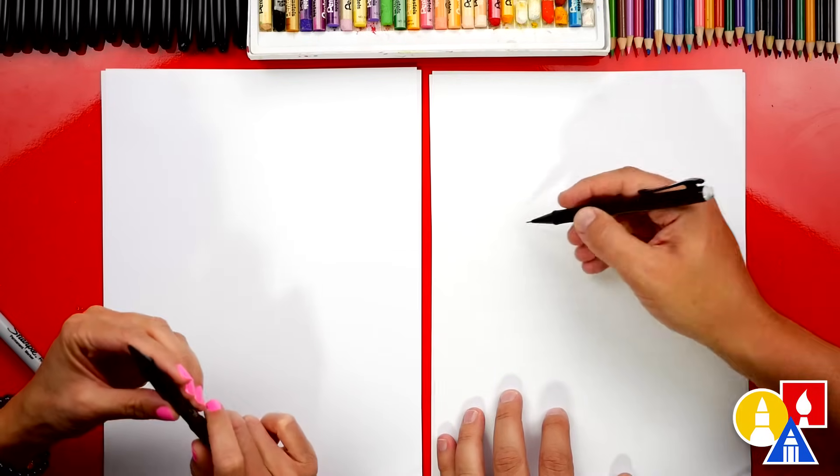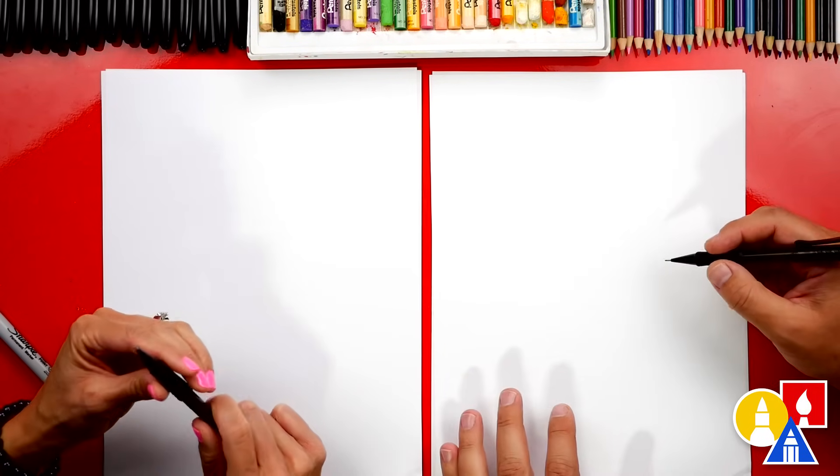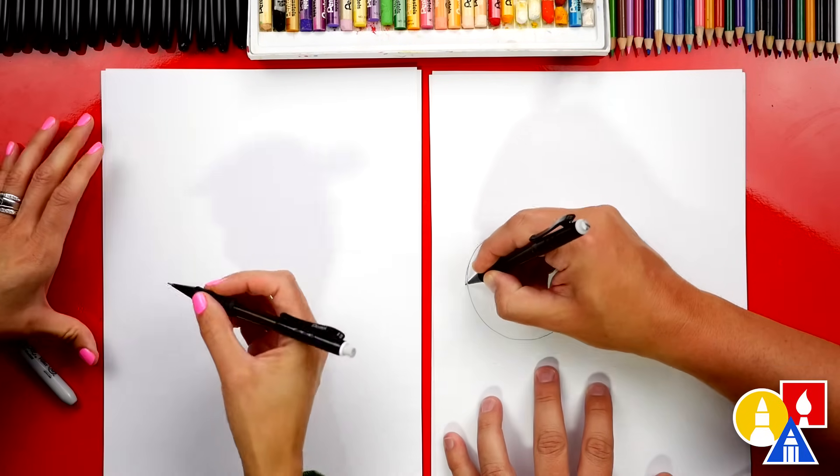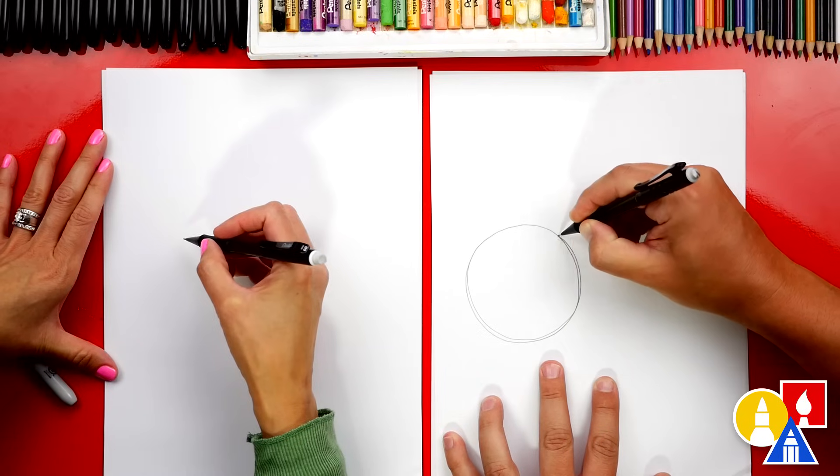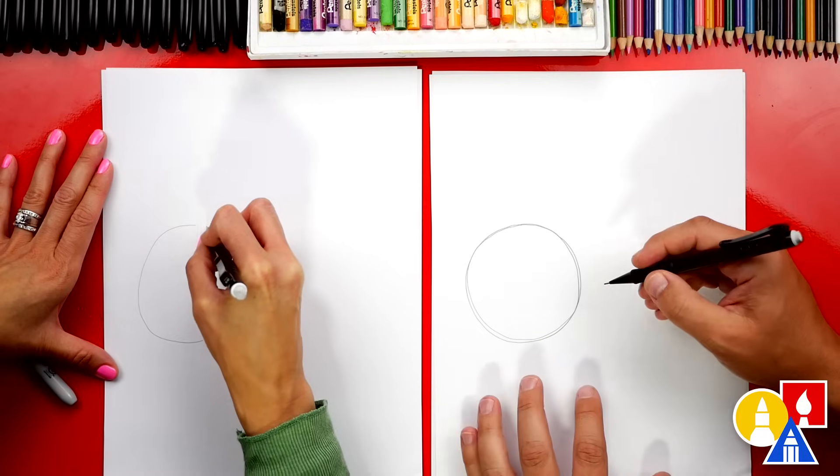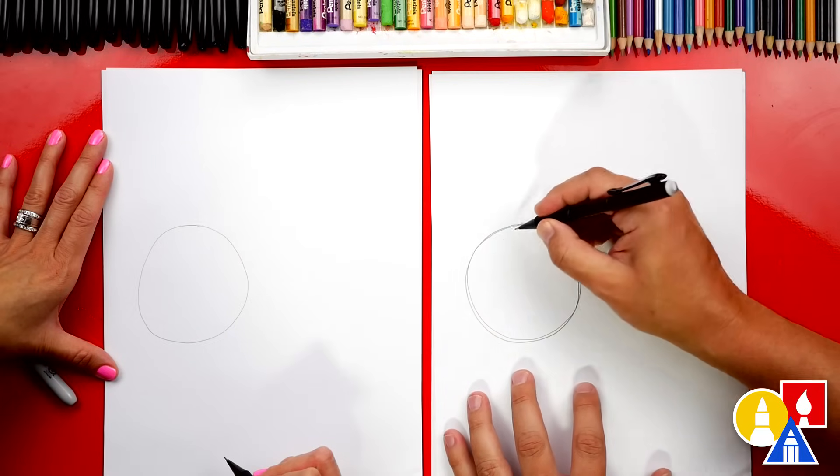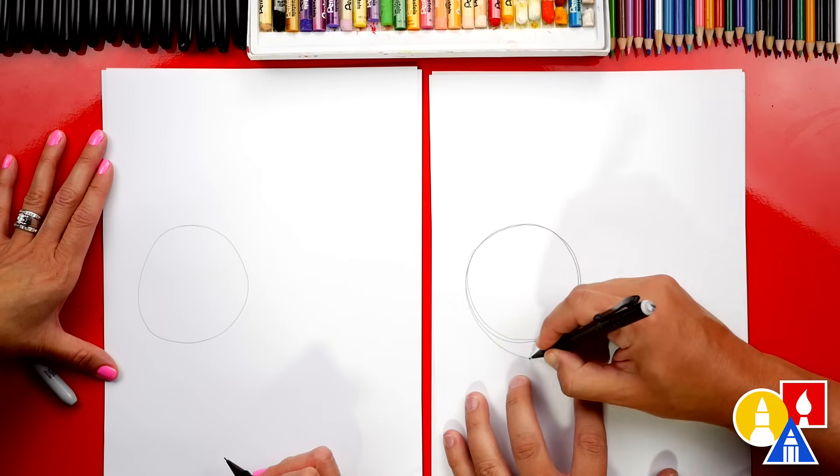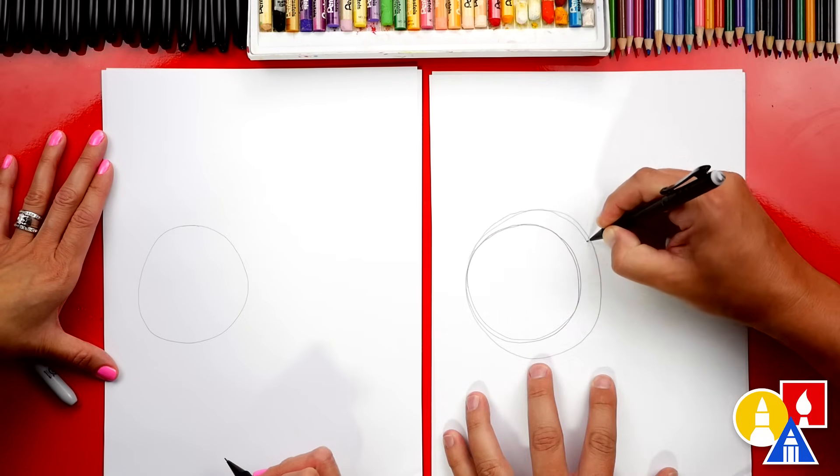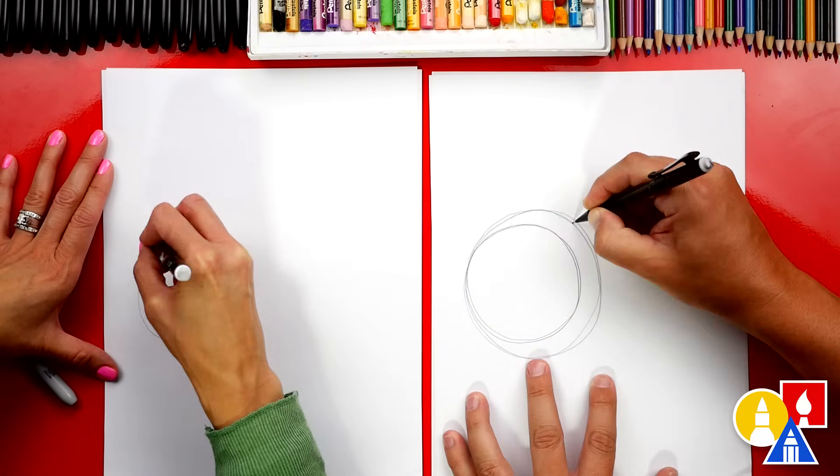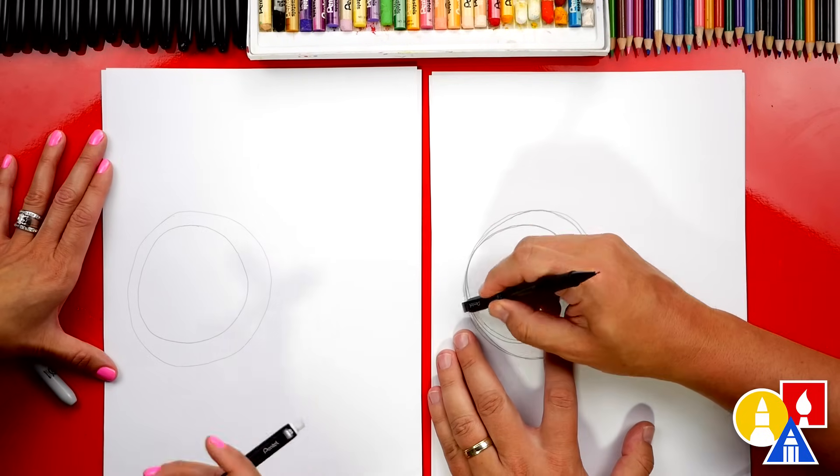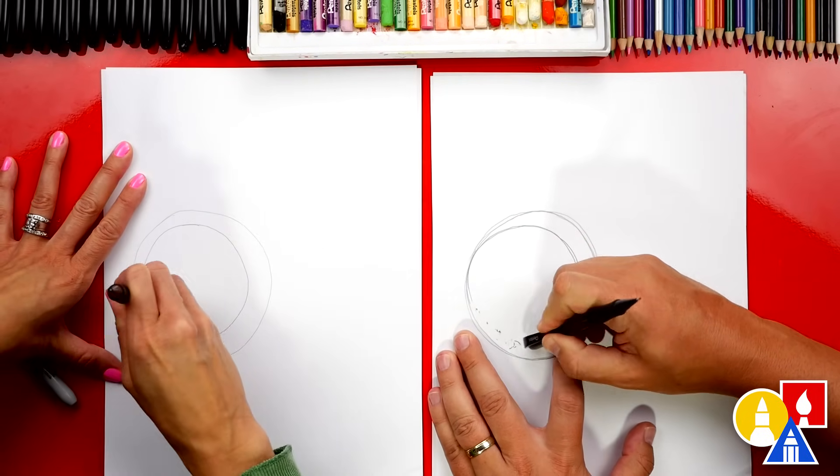We're using our pencil first so that we can draw the general shape of the water balloon. Let's draw a big circle over here on the left side. I'm gonna press hard so that our friends can see it on the camera, but you can press lightly so that it's easier to erase. The nice thing about drawing with a pencil is you can redraw it if you want to. I'm gonna draw it a little bit bigger. Do you want to draw yours bigger too? Then we can go in and use our eraser and erase the first circle that we're not gonna keep.